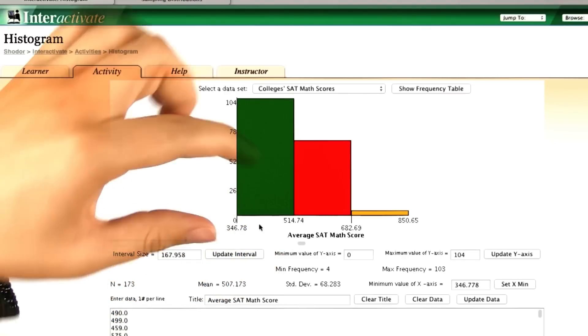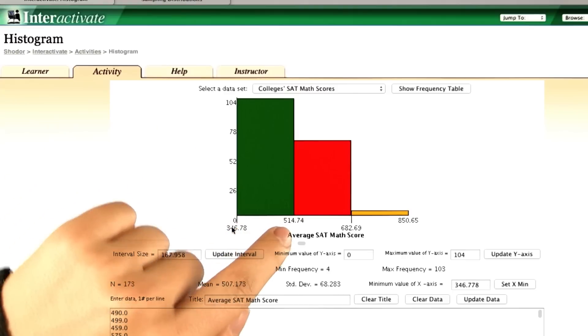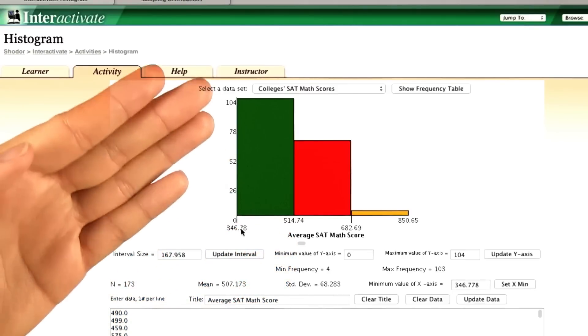And the mode changes as we change the bin size. If we make the bin size really big, then the mode occurs in this interval between 346 and 514.74. So, the mode really depends on how you present the data.